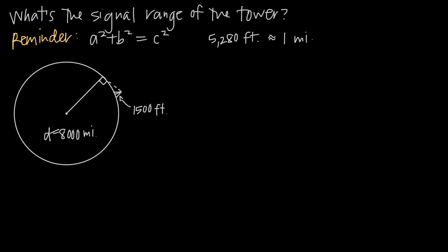In this video, we're going to be talking about the tangent line of a circle. When we say the tangent line, tangent means touch. So we're talking about the line that just touches the circle at one single point. So the tangent line to a circle would look something like this.